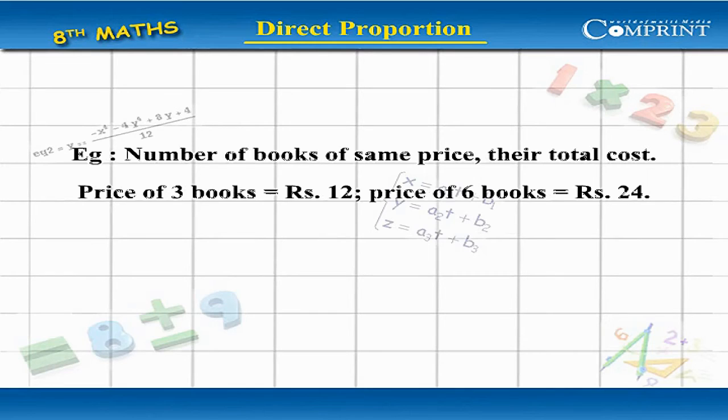Example: Number of books of same price and their total cost. Price of 3 books equal to Rs 12.